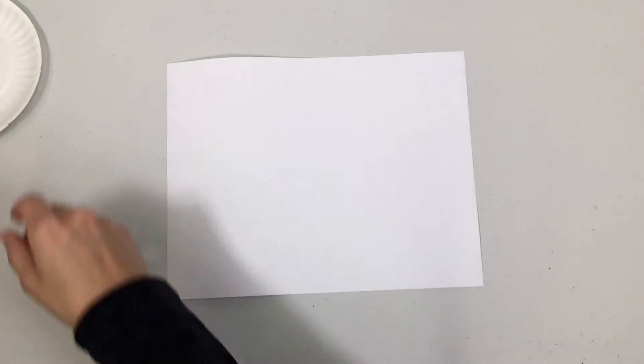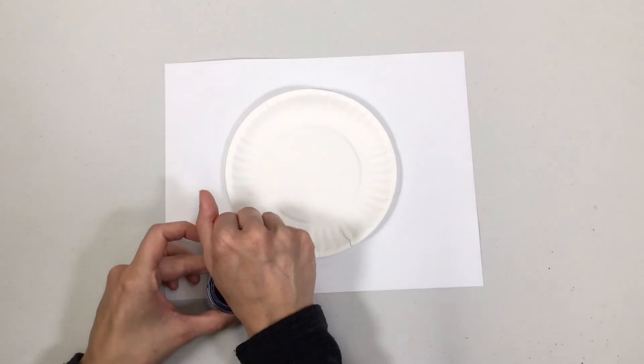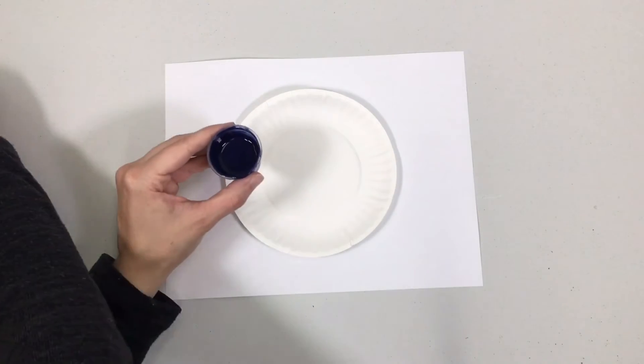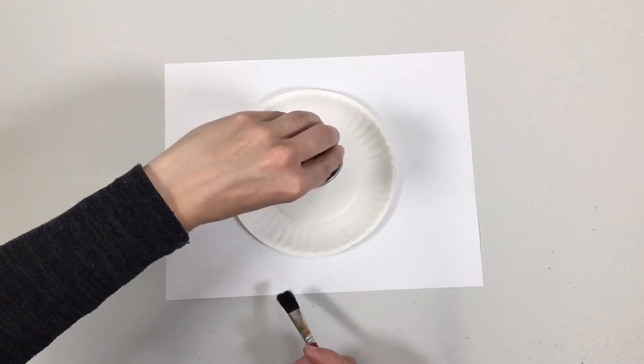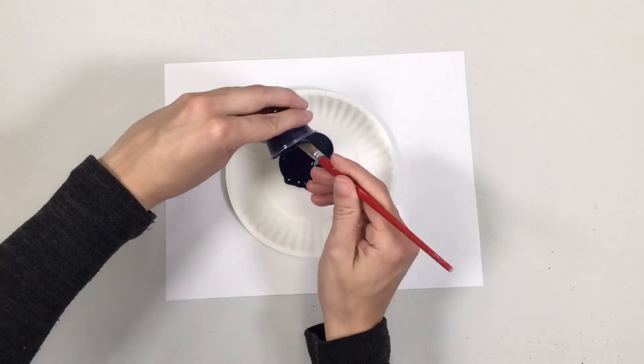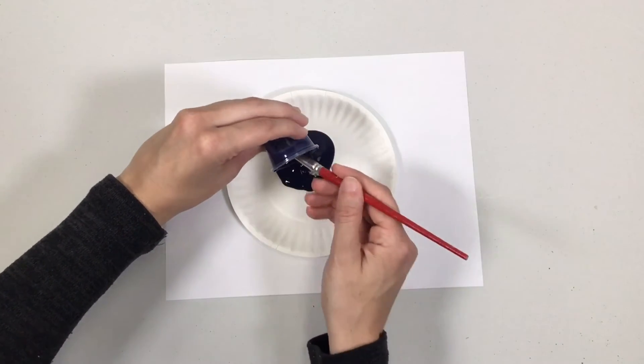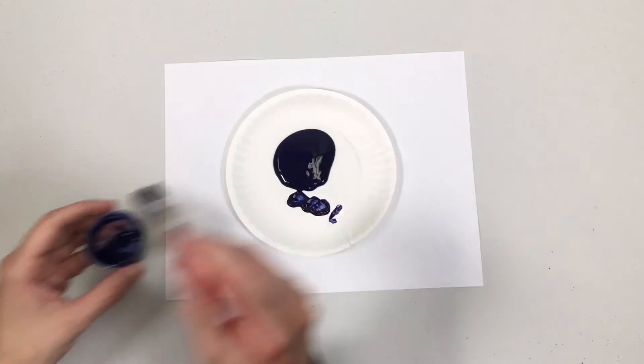The next thing we're going to do is take our paper plate that was in our bag and our little container of paint. Put our paint, tip it all in there like that. You can use your paintbrush to scoop it out. And this is going to be for dipping our paper tube in here.